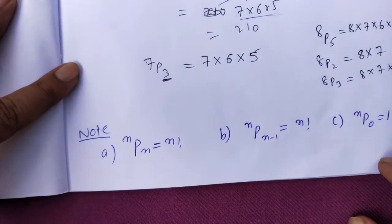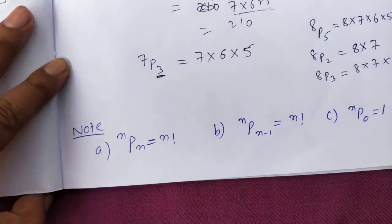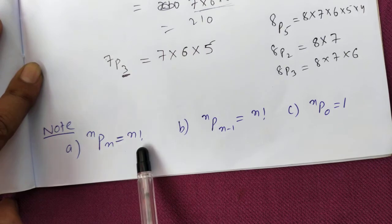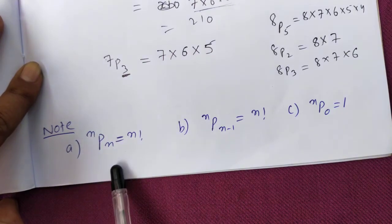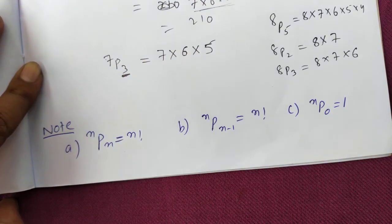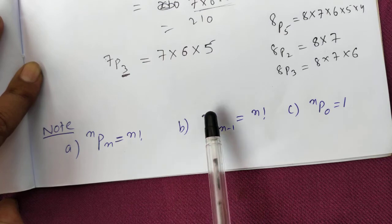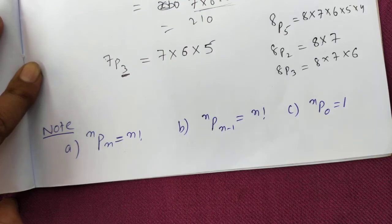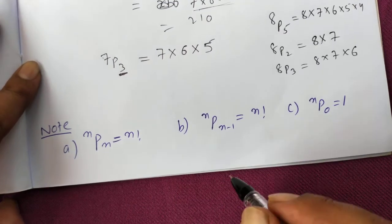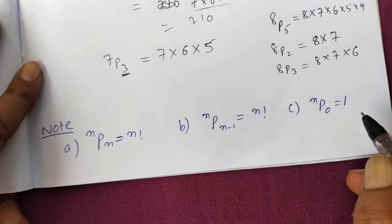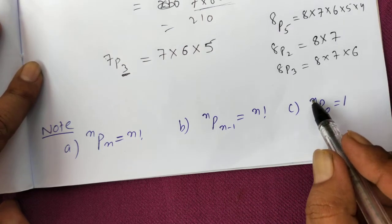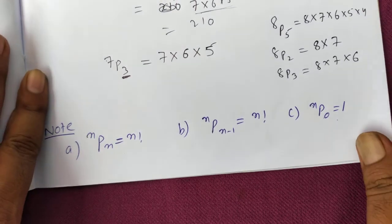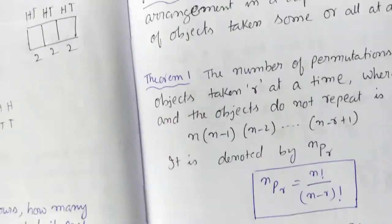Please note these special formulas: NPN = N factorial. For example, 5P5 = 5!. Also, NP(N−1) = N factorial. And NP1 = N always equals 1.